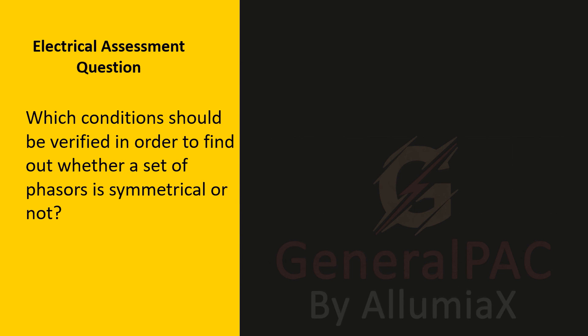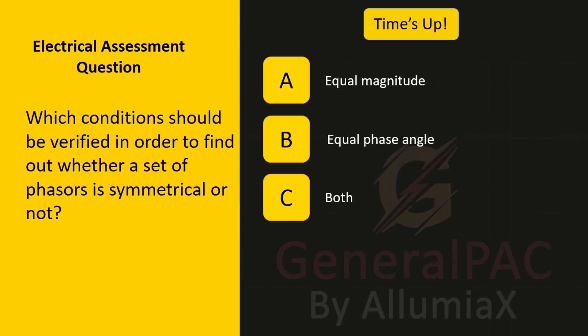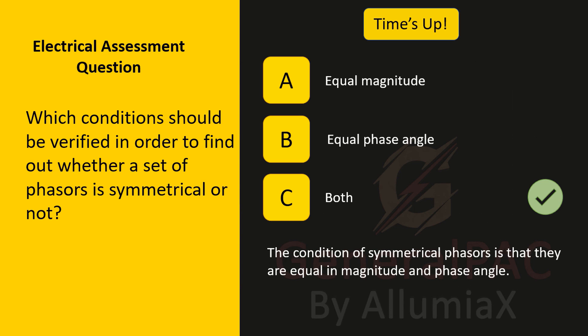Which conditions should be verified in order to find out whether a set of phasors is symmetrical or not? Should we look at equal magnitude, equal phase angle, or both? We should be looking at both. The condition of symmetrical phasors is that they are equal in both magnitude and phase angle. With three phases and 360 degrees, if we divide equally they should be 120 degrees displaced from each other.